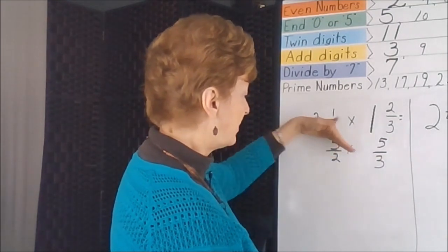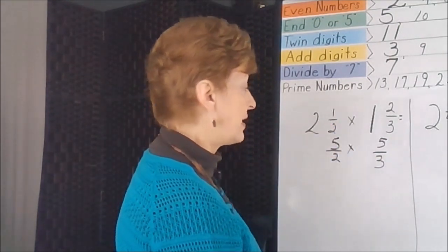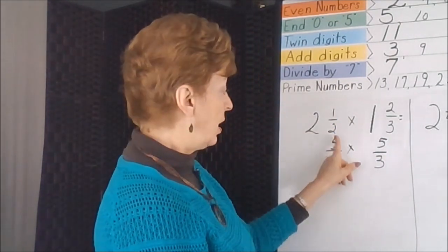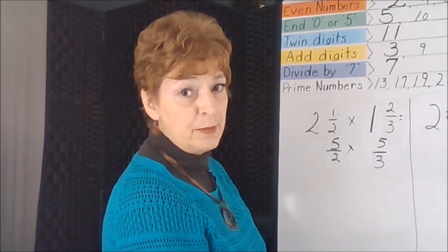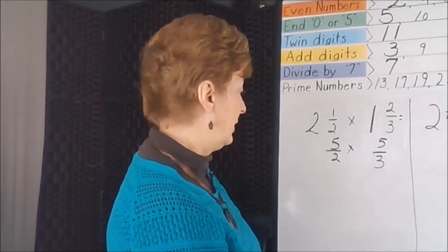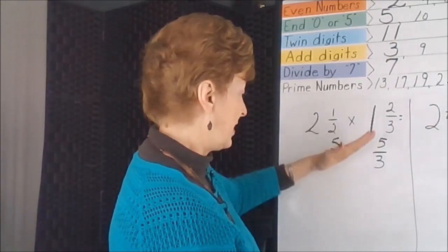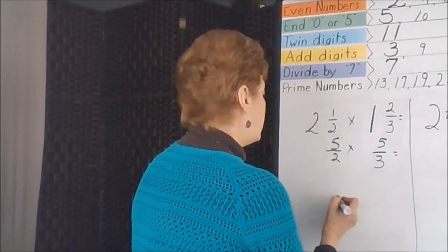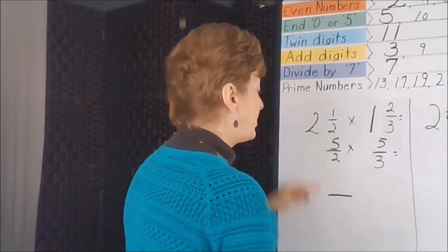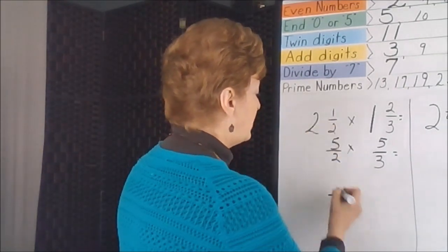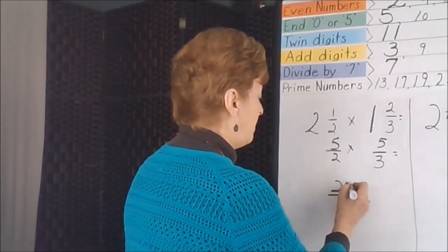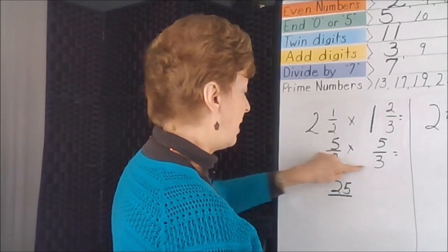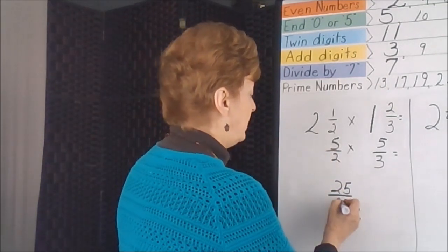At this point we would want to check our diagonals to see if there's any way we could simplify before we do the multiplication. Unfortunately there isn't, so we're going to take our numerators and multiply them — five times five is twenty-five — and then multiply the denominators, which would be six.